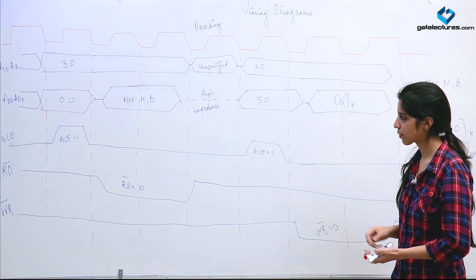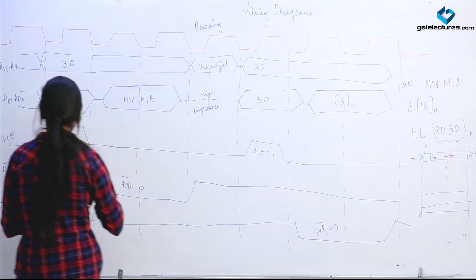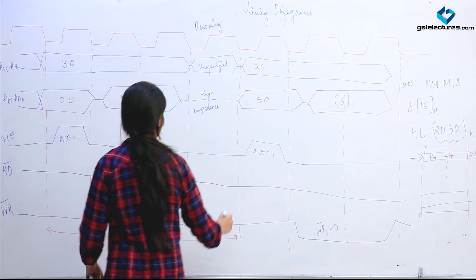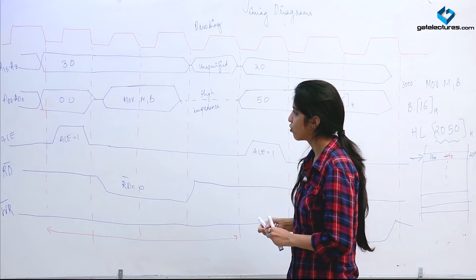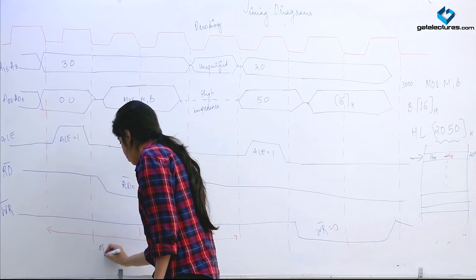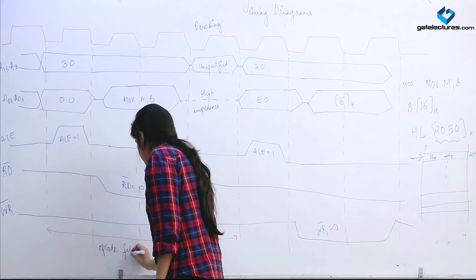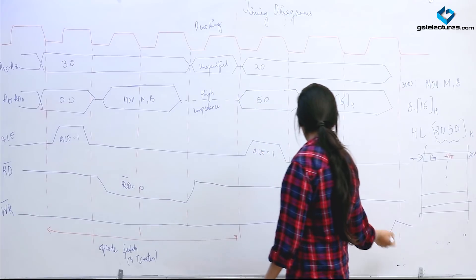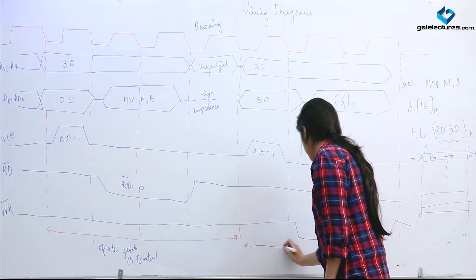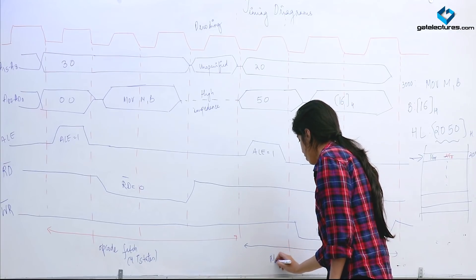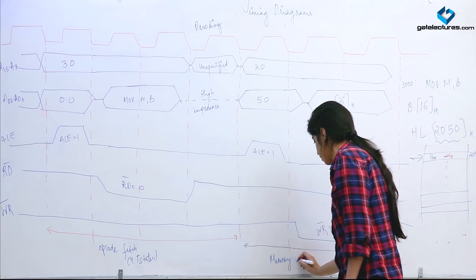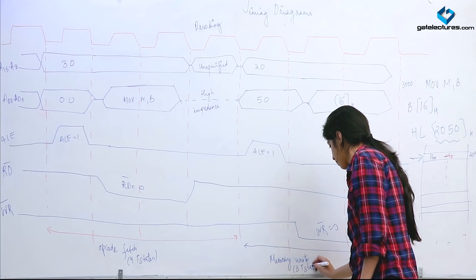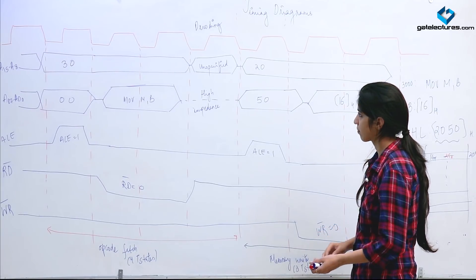This completes the timing diagram for memory write. The first 4 T-states are used for opcode fetch, and the next 3 T-states are used for the memory write machine cycle — 3 T-states for memory write.